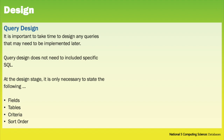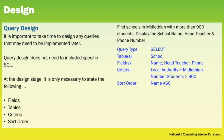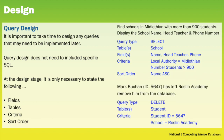Once we've designed the structure of the database, it is important to take time to design any queries that may need to be implemented later. At this stage, we do not include specific SQL. We're only looking for an indication of the fields, tables, criteria and sort order that would be required to perform a query. For example, if we were to find all schools in Midlothian with more than 900 students, the type of query is select, the table required is school, the fields are name, head teacher and phone number, and then we dictate the criteria and the sort order. And the same again for a delete query.